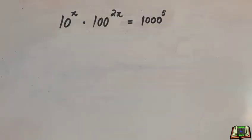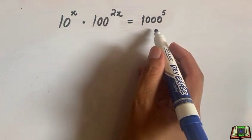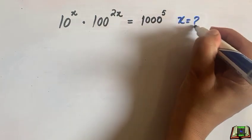Hello and welcome to this nice exponential Olympiad question. If 10 to the power x times 100 to the power 2x is equal to 1000 to the power 5, then we are supposed to find the value of x in this question.